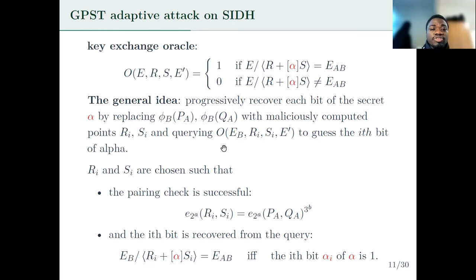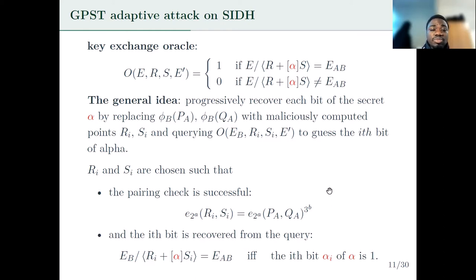In the very first version of SIDH, the only key validation method was the pairing check. The points R_i and S_i are chosen such that the pairing check equation is satisfied, and also such that the curve obtained by Alice equals the curve computed by Bob when the bit being attacked is 1, and is different when it is 0. So the key exchange oracle effectively helps Bob distinguish whether the bit he is attacking is 1 or 0, allowing him to totally recover alpha in polynomial time. This is the main reason why in SIKE, the Fujisaki-Okamoto transform is used to counter this adaptive attack.